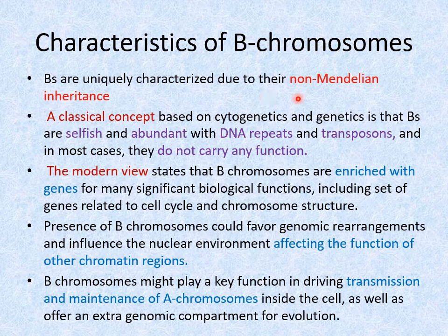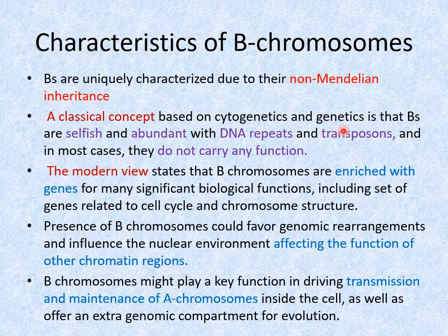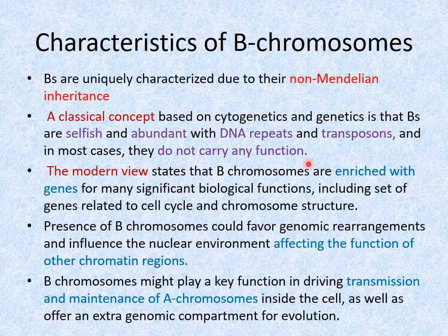B chromosomes do not follow the Mendelian inheritance pattern; they have their own mechanism of being carried from one generation to the next. According to the classical concept — based on cytogenetics and genetics — these B chromosomes were considered selfish chromosomes, abundant in DNA repeats of different types, composed of repeated DNA sequences and transposons.